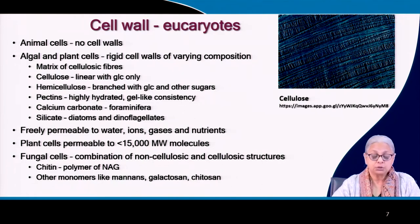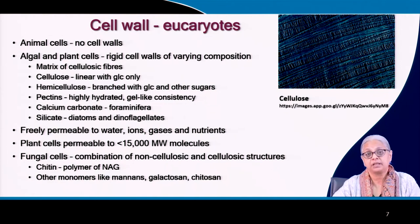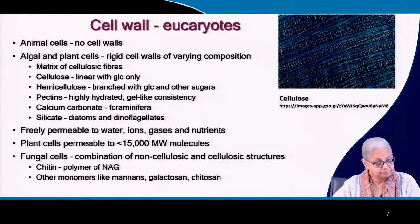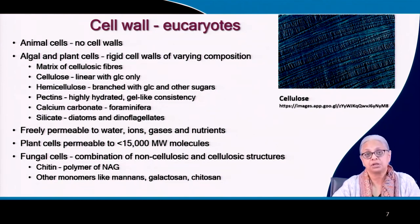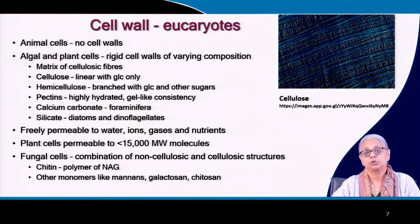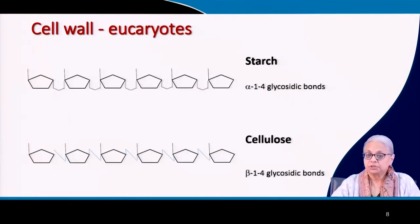Plant cells can allow large molecules up to 15,000 molecular weight to permeate through their cell walls, enabling them to absorb nutrients from their environment through the root zone. Fungal cells have a combination of non-cellulosic and cellulosic structures in their cell walls. Chitin is a polymer of NAG, and other monomers such as mannins and galactosan can also be part of fungal cell walls.